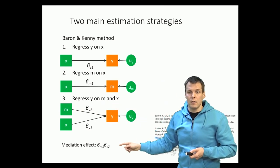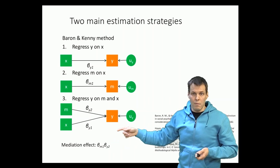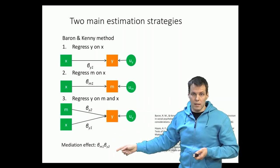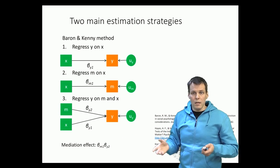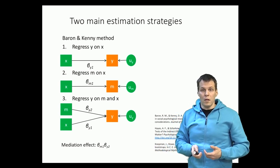The mediation effect then is the product of these two paths. You have the path from x to m and the path from m to y. That's the mediation effect. That's a simple strategy, and that's the strategy that you should probably study first.